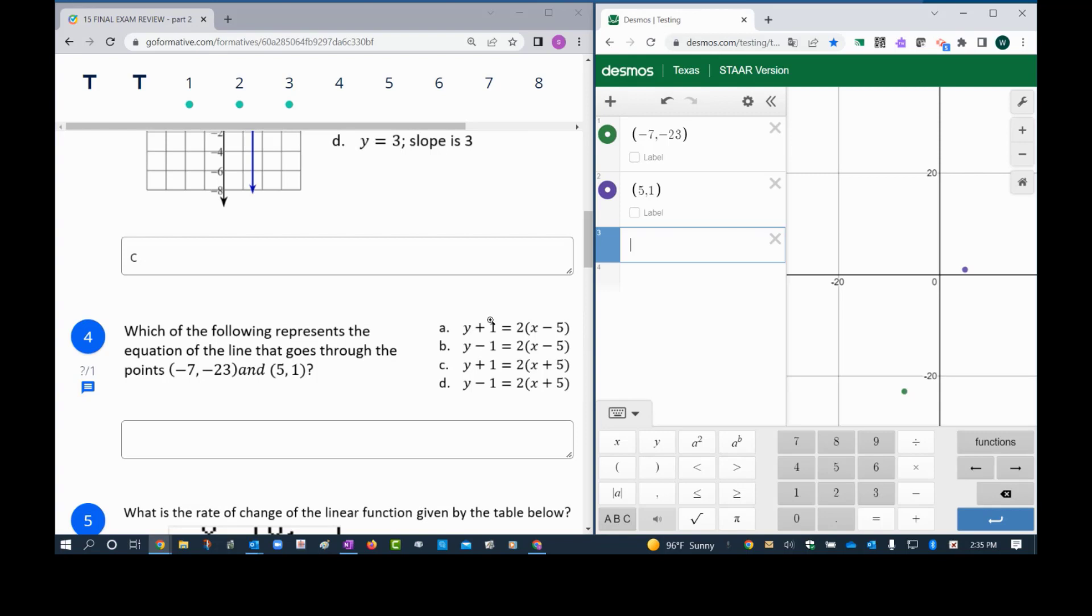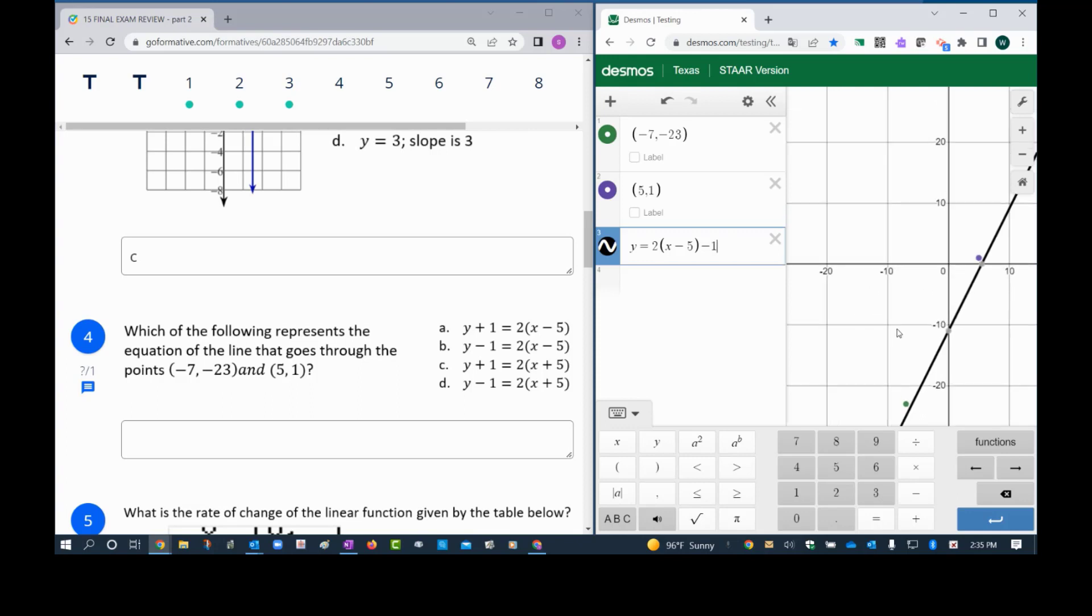In order to use these equations, we need to make sure the y is alone. The y is not alone, so what we're going to do is send the 1 to the other side. So here I'm going to copy y equals 2 times (x minus 5), and if I move the 1 to the other side it becomes negative 1.